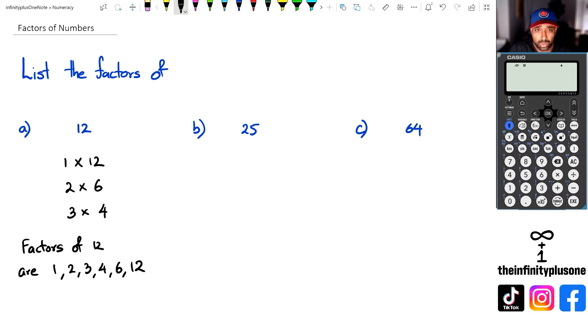Now looking at question B, we've got 25, and we want to look for all the numbers that actually multiply to 25. So in this case, we've got 1 times 25, and then obviously we can't do 2 times 25, or 3, 4,